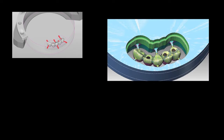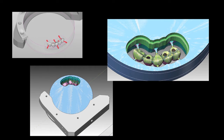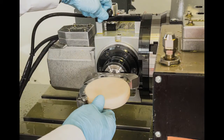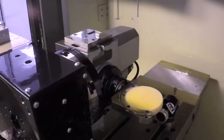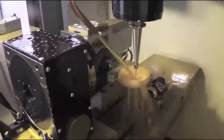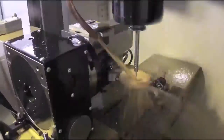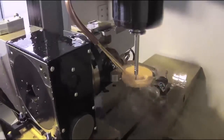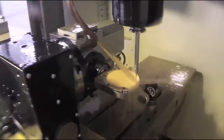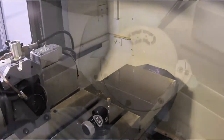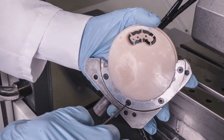Once we confirm the prosthetic design on the virtual model, CAM files are generated and then sent to the milling center for fabrication of the screw-retained temporary. A layered PMMA disk is inserted into the fixture and the temporary restoration is milled, creating an exact physical duplicate of the CAD design.